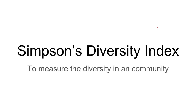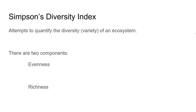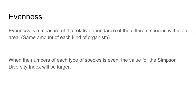Now that we've talked about what communities are and that they have different diversity, there's a way to calculate that diversity — it's called the Simpson's Diversity Index. What the Simpson's Diversity Index is trying to do is put a number to how diverse an ecosystem or community is. It tries to compare communities and say community A is more diverse than community B. In order to do that, two things had to be defined: evenness and richness.